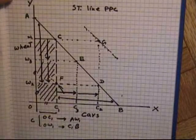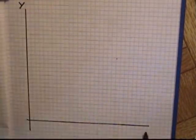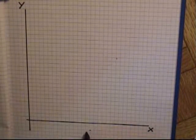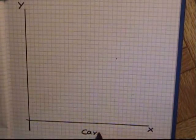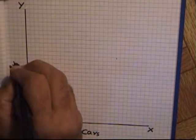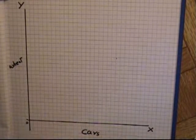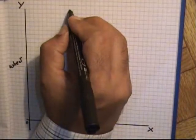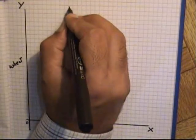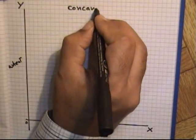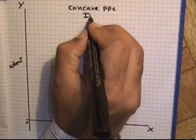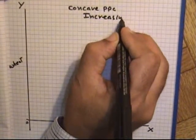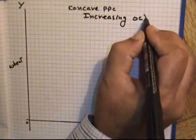Now let us move to the Concave Production Possibility Curve. Here, the Y-axis represents one product and the X-axis represents another — we assume the same commodities, cars and wheat. This is called the Concave Production Possibility Curve, which is based on the increasing opportunity cost principle.